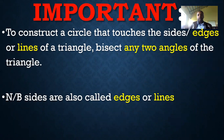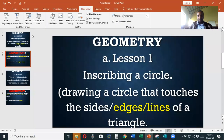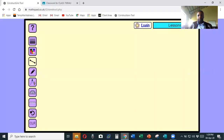By the end of the activity we will be able to draw a circle that touches the sides or lines of a triangle. Some important points before we start: to construct a circle that touches the sides or edges of a triangle, bisect any two angles of the triangle. Note that sides are also called edges or lines. So take your set - here we go. Now draw any angle of your choice.